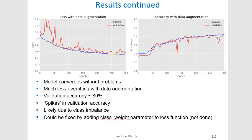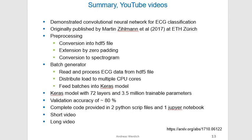After applying data augmentation, we can see that it really helps with overfitting — there is much less overfitting. However, there are still spikes in the validation accuracy, which is likely due to class imbalance, since we only have about 10% positive samples for atrial fibrillation. This could be fixed by adding a class weight parameter to the loss function, which is the next step I would try.